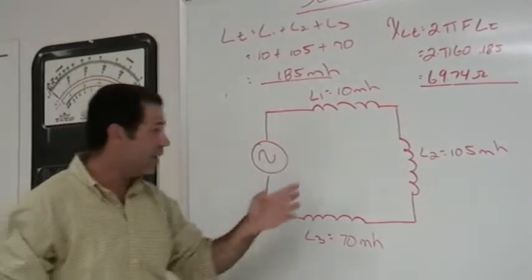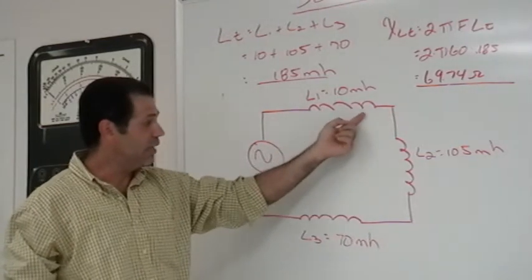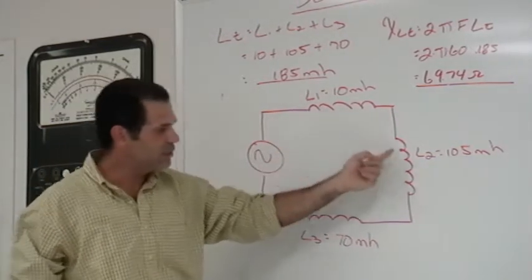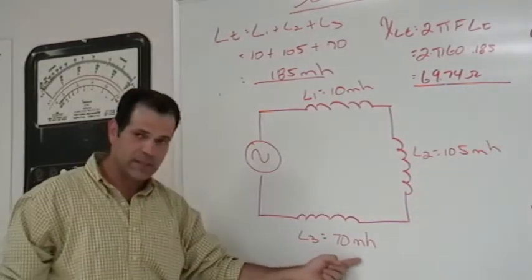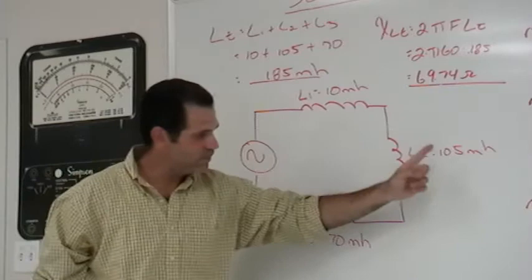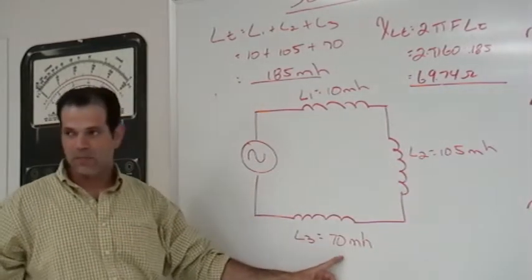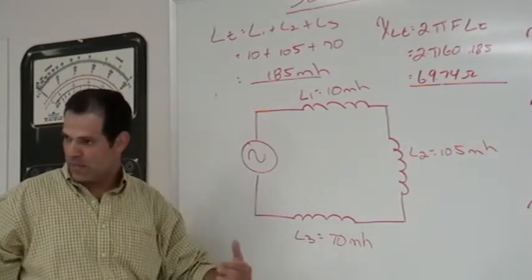In this case the values that we have are in millihenries. L1 is 10 millihenries, L2 is 105 millihenries, L3 is 70 millihenries. As long as the prefix is the same, we don't have to change it to its base value.